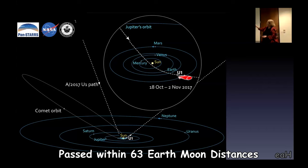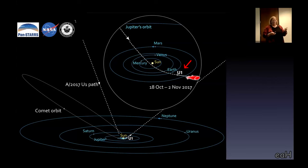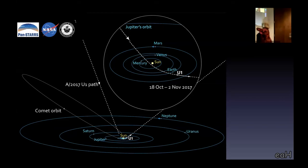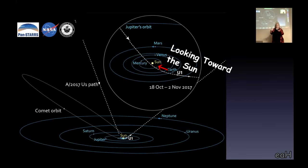This is a diagram showing our solar system. You can see the plane of all the planets here. The dotted line shows the path of this thing. So this object came from above the plane of the solar system, passed beneath the plane of all the planets, very close to the sun, inside the orbit of Mercury.